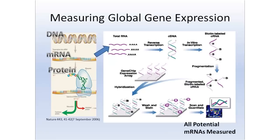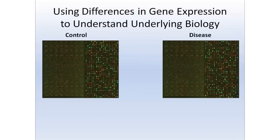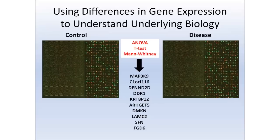You can imagine how this would help in biology — it has really changed the entire field of science. We can take samples from normal individuals and those with disease, measure mRNA from both, and determine what genes are different — higher or lower — in the disease. We use statistics to generate a gene list of genes that differ between the two. If we study the biology underlying these genes, we get a better idea of how the disease arises and potential cures for it.